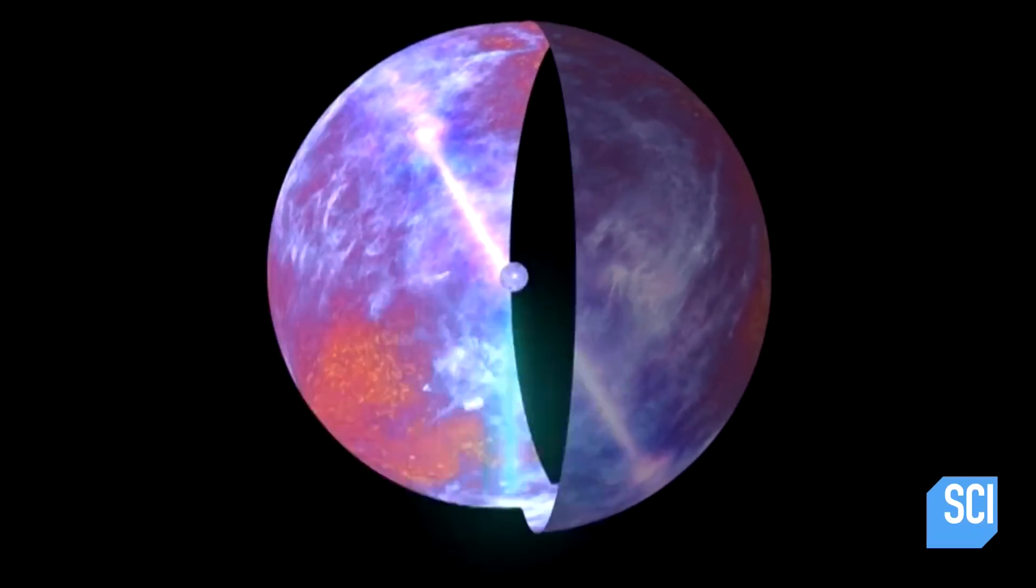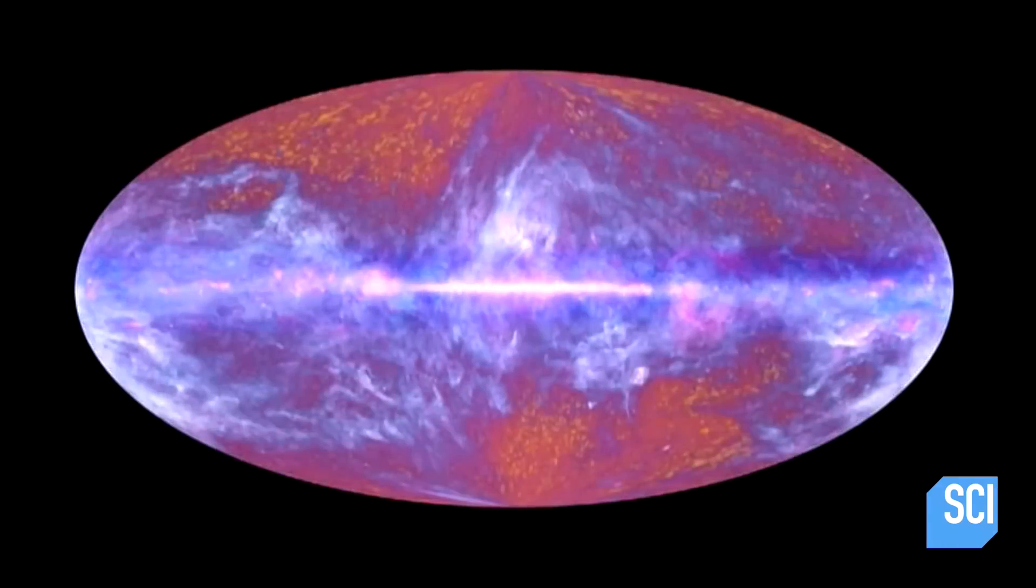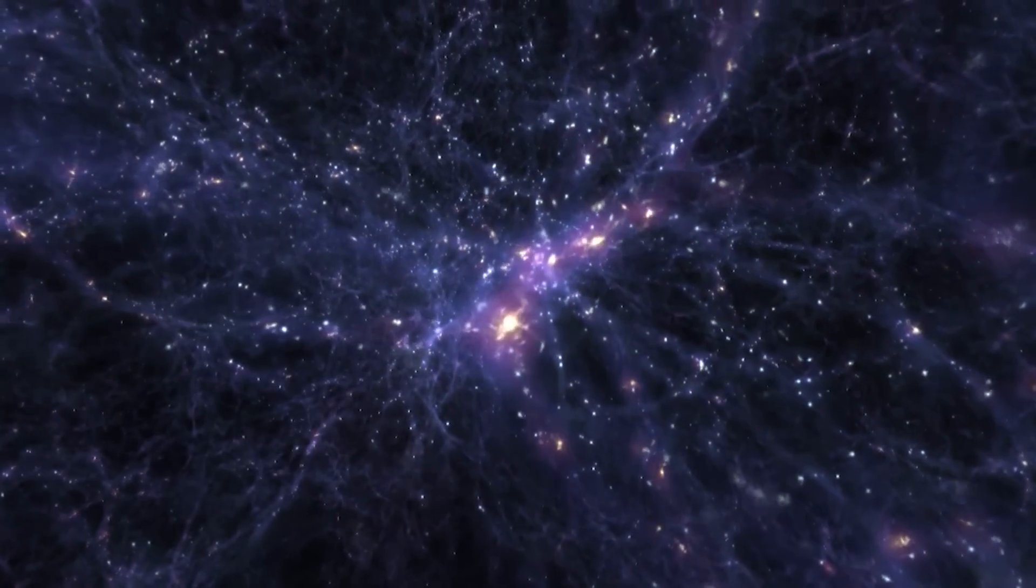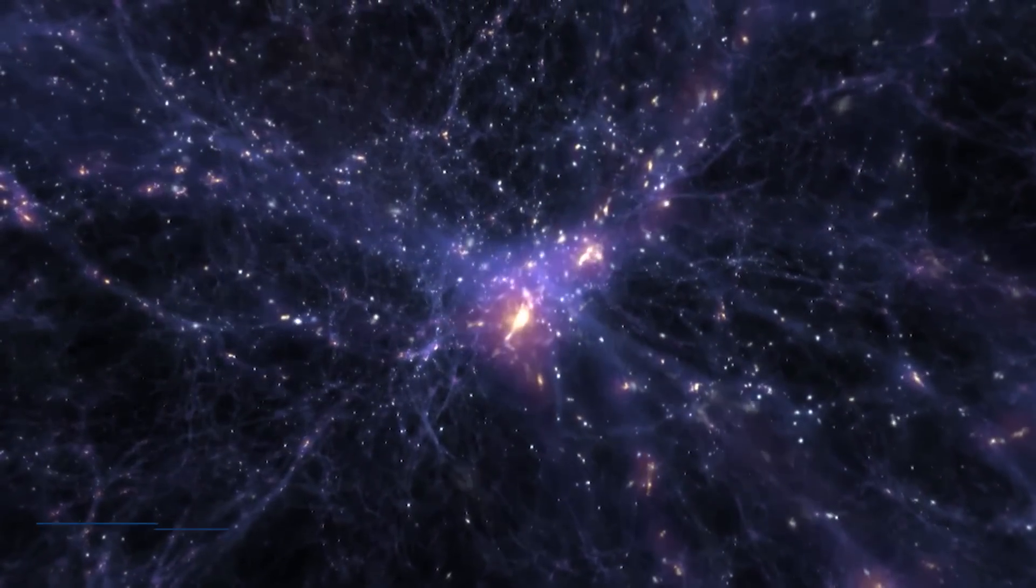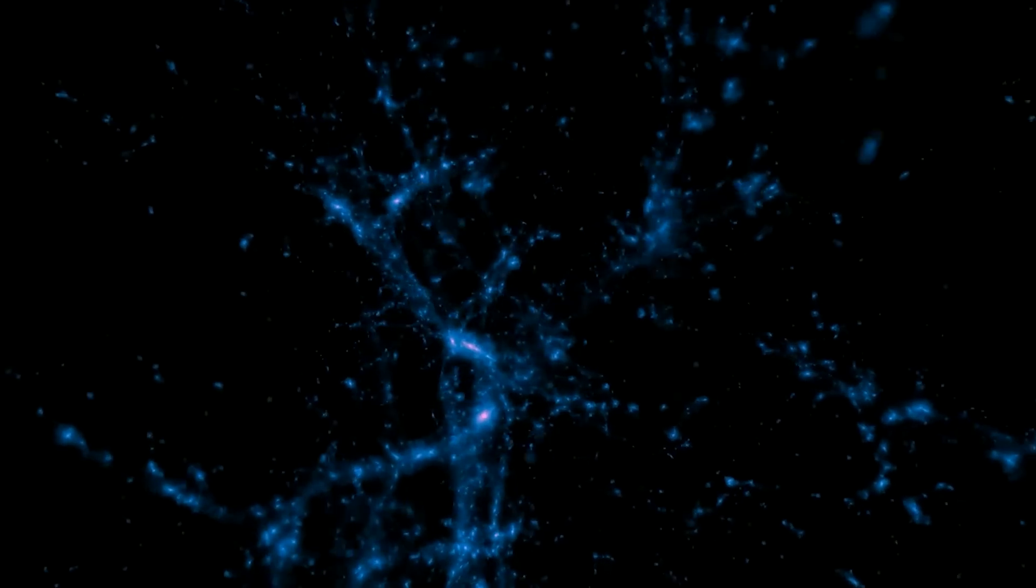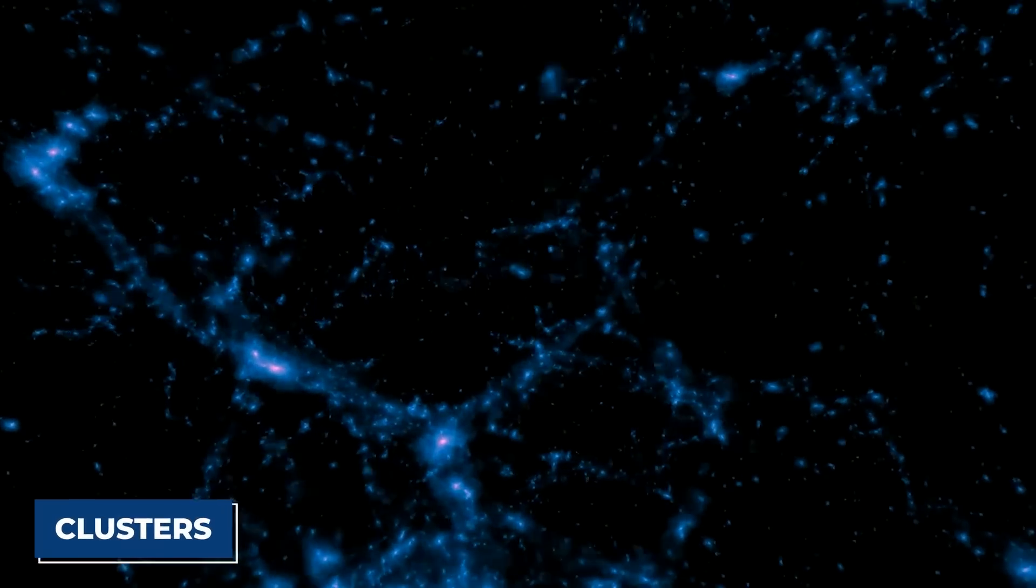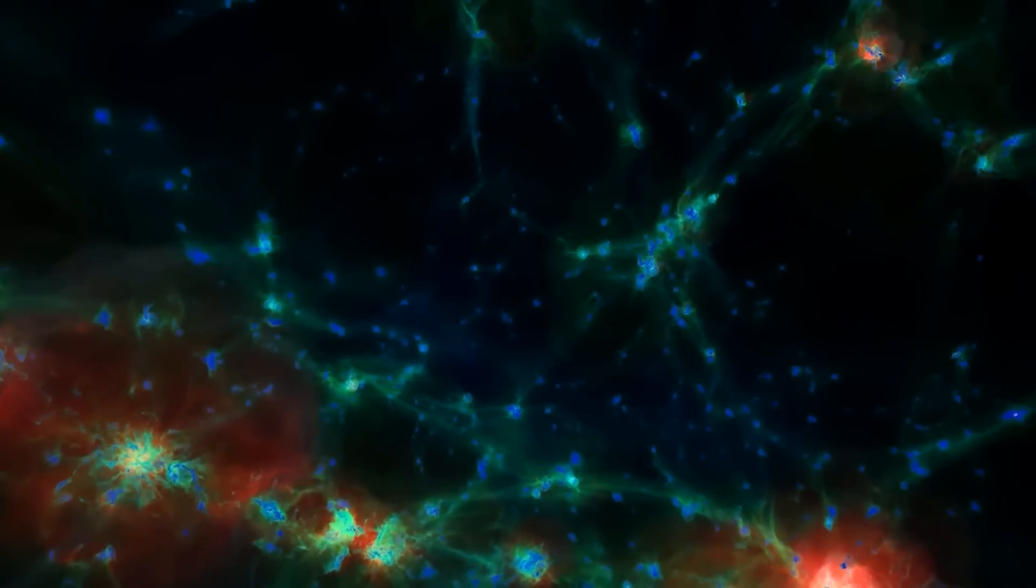Since then, scientists have conducted surveys that have managed to produce more detailed maps of our universe and show how the galaxies are arranged like a giant web. The majority of galaxies in our universe are found in long structures known as filaments that wind through the cosmos. When these meet, they create regions with a high concentration of galaxies known as clusters. Between these threads, however, are huge empty voids with hardly any galaxies at all.